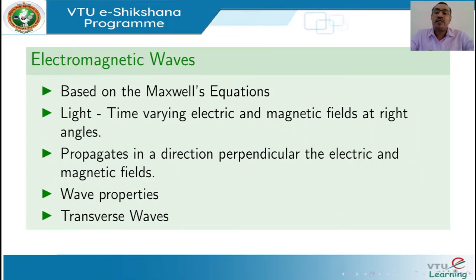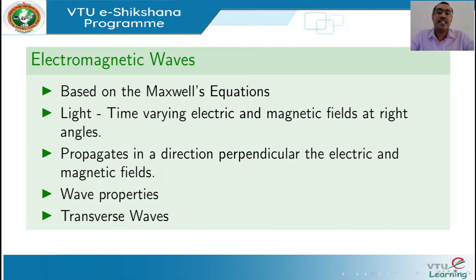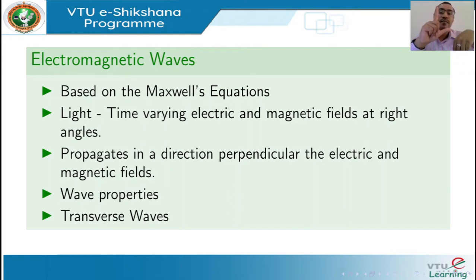Based on Maxwell's equations, Maxwell put forward the electromagnetic theory of light. According to this electromagnetic theory, light is made up of time-varying electric and magnetic fields, and these electric and magnetic field variations are in mutually perpendicular directions and perpendicular to the direction of propagation.